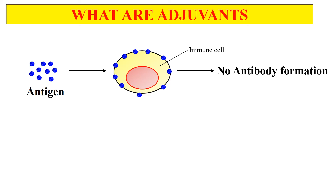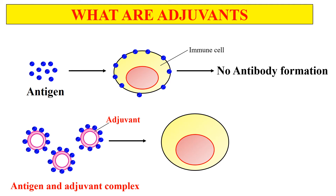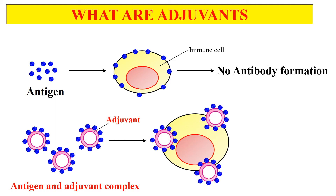But in the case of adjuvants — these pink circles represent the adjuvant — if this weak antigen is mixed with the adjuvant, there will be a formation of an antigen-adjuvant complex. Now if this antigen-adjuvant complex interacts with the immune cells, there will be generation of antibodies, or in simple words, the immune system gets activated. So the adjuvant makes it so that the weak antigen can now also activate the immune system, increasing its immunogenicity.